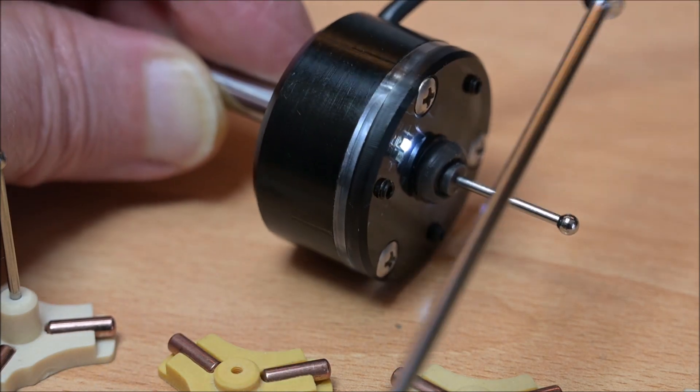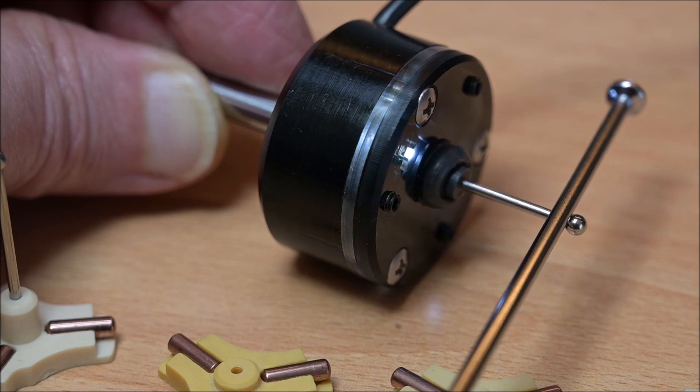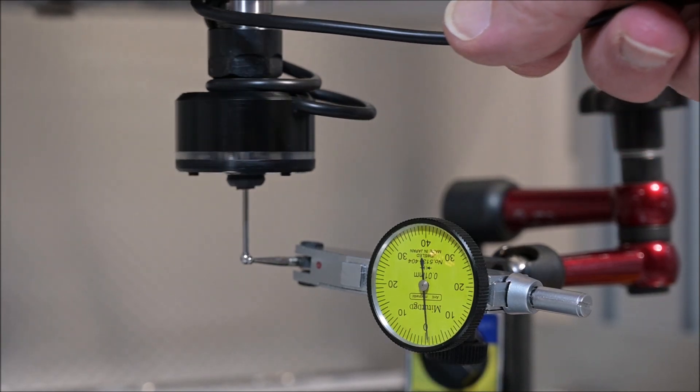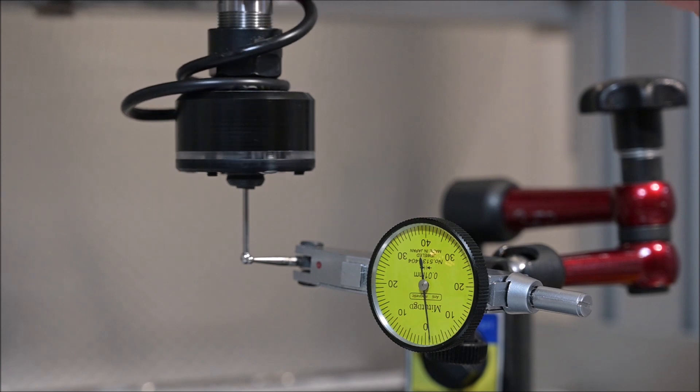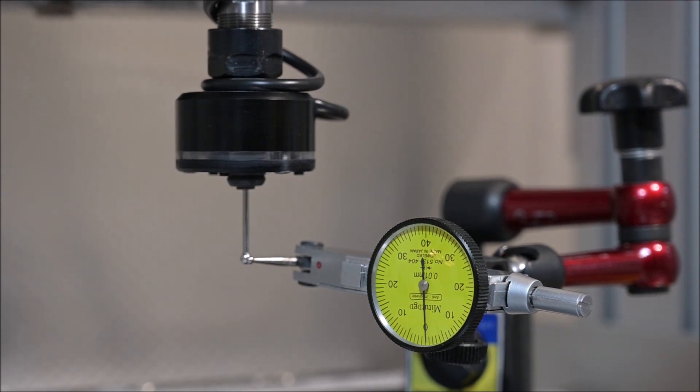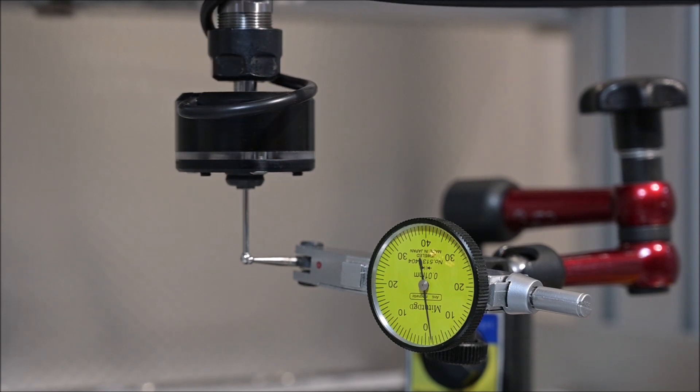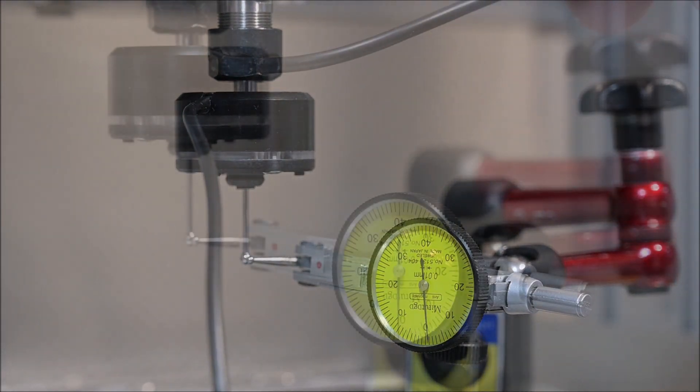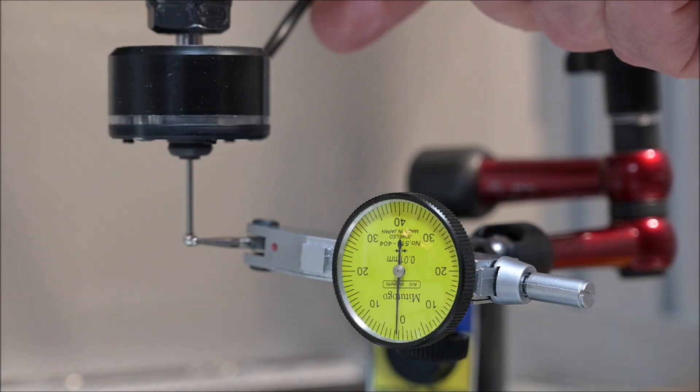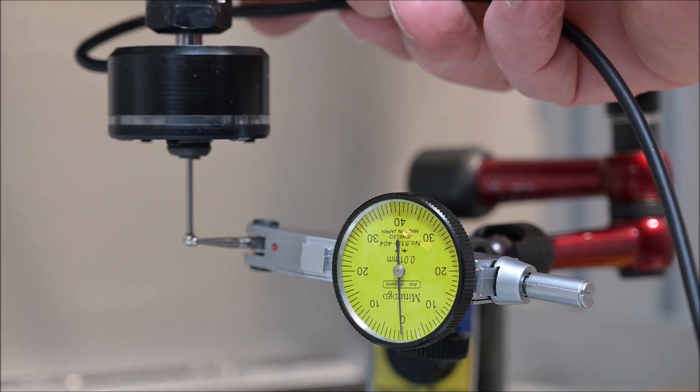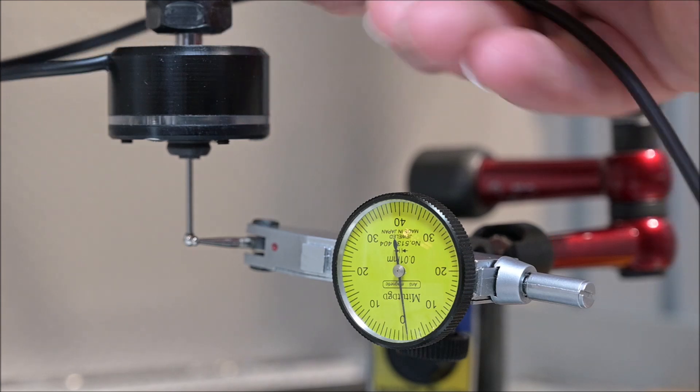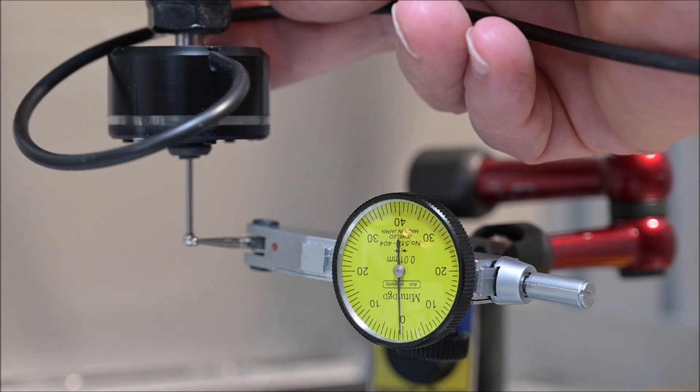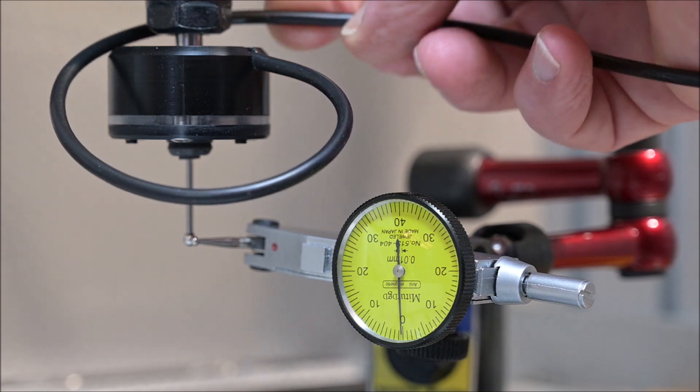When I received this 3D probe, it was off by 0.15mm, which was quite a lot. But after some fiddling with the three grub screws, I tuned it to be off by not more than 0.03mm, which is good enough for me for now. Once I start using it more seriously, I'll probably tune it even better using my lathe, because when it's horizontal, it's easier to access the grub screws.